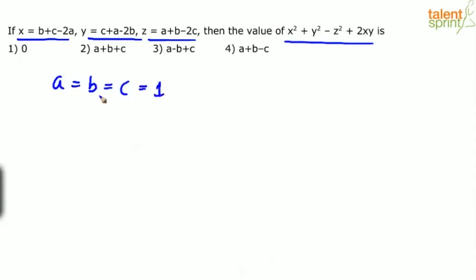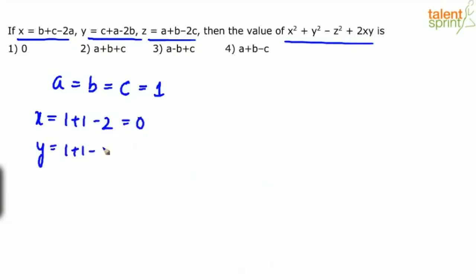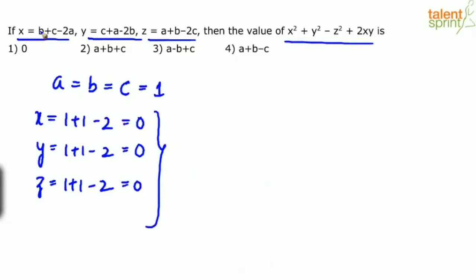When you're substituting in the exam, you don't need to write these steps — do it mentally. Take a equals b equals c equals 1. Then x equals 1 plus 1 minus 2 equals 0, y equals 1 plus 1 minus 2 equals 0, and z equals 1 plus 1 minus 2 equals 0. You need not write this on paper; you can understand it mentally.